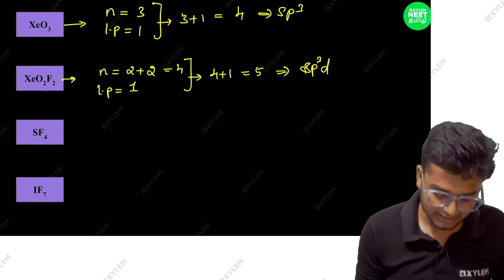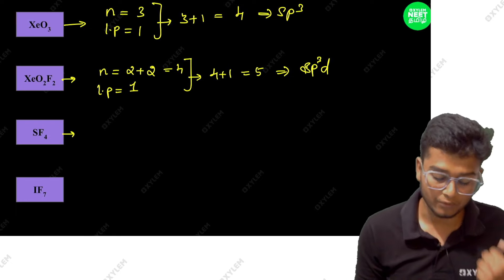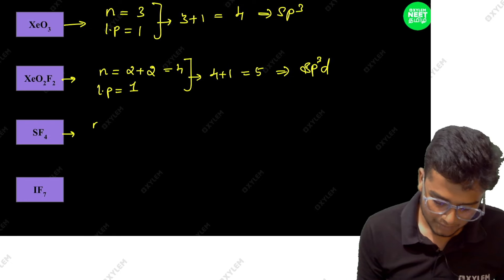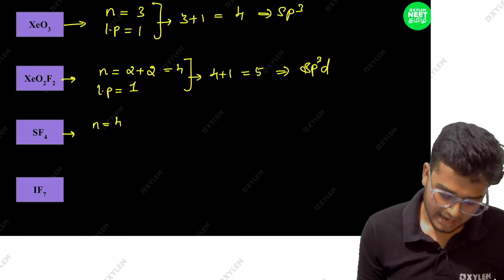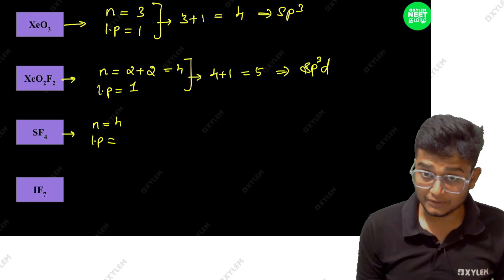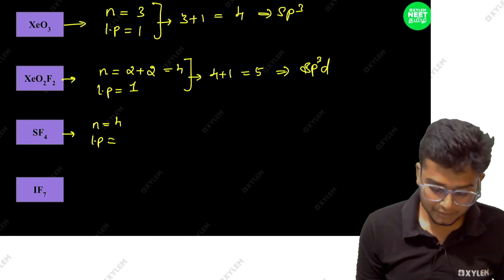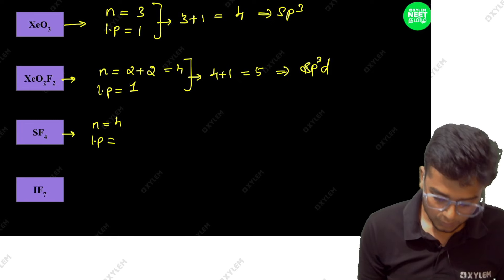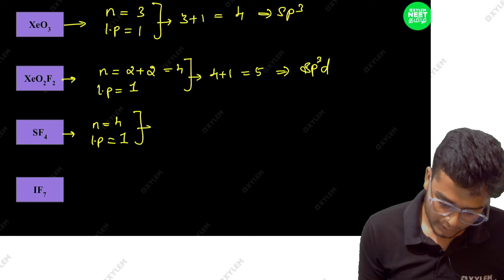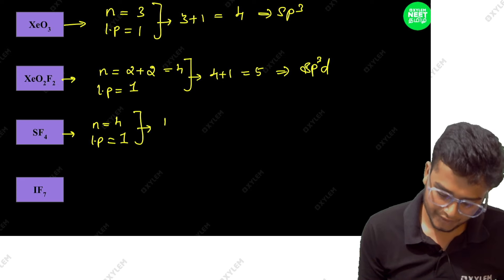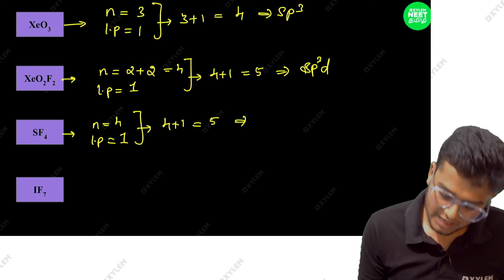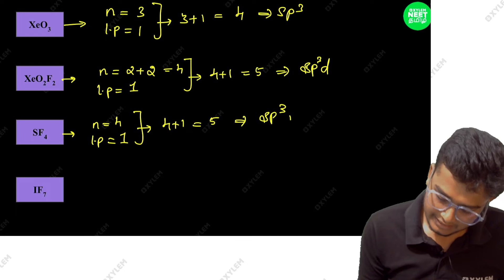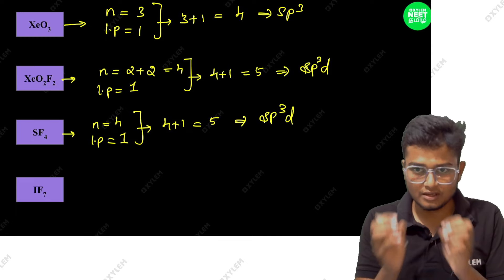Next, SF4. Number of atoms: 4. Lone pairs: 1. So 4 plus 1 equals 5. Therefore SF4 has SP3D hybridization.